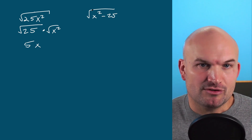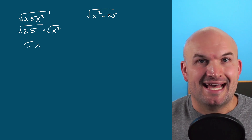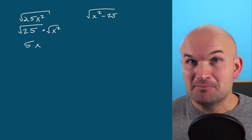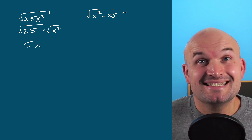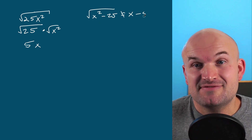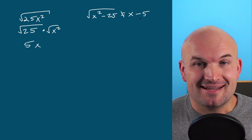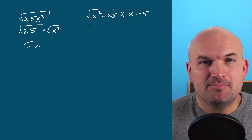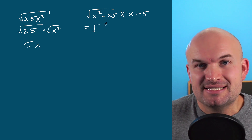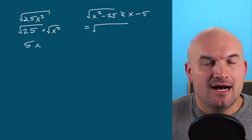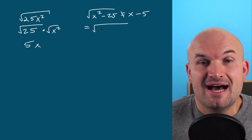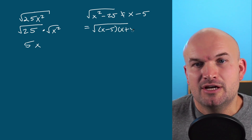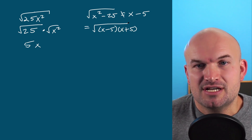We cannot distribute the square root to the x squared and the negative 25. It looks like we want to because they're both perfect squares, but we cannot. It does not equal x minus 5. The only thing you could possibly do here is factor x squared minus 25 into x minus 5 times x plus 5 using the difference of two squares.